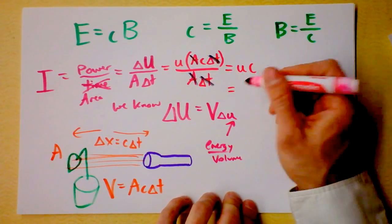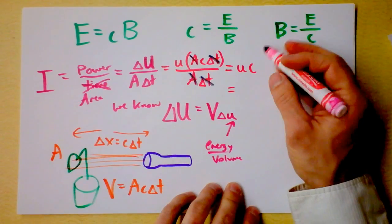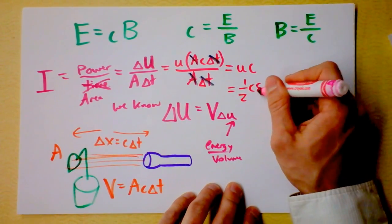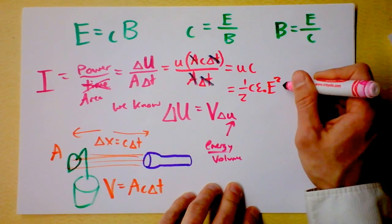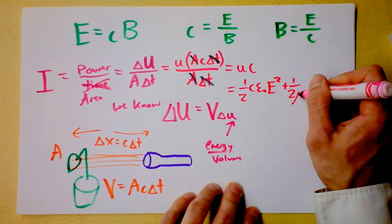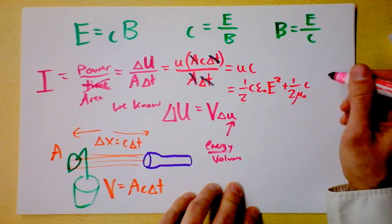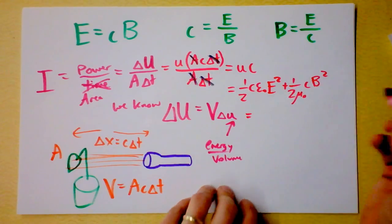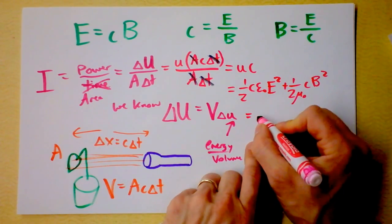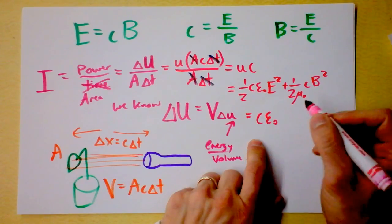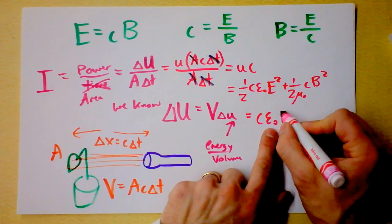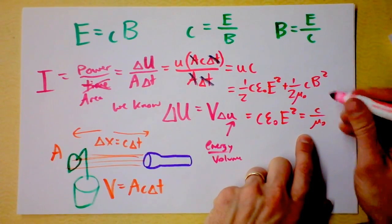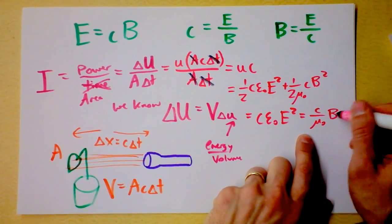We've already studied the energy density of light waves. So we can just multiply what we had previously by the speed of light. That gives us one-half the speed of light times epsilon-naught electric field squared plus one-half the speed of light times mu-naught inverse times the magnetic field squared. But remember their contributions are equal. So that would be the same thing as C times the permittivity of free space times the electric field squared. And that of course is the same thing as C over mu-naught times the magnetic field squared.